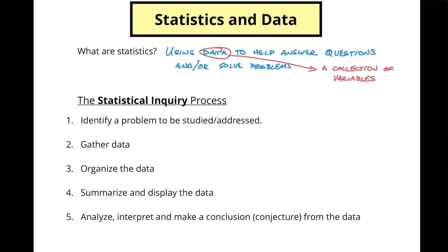When we use statistics, we kind of go through a general process, and that process we call the statistical inquiry process. Here are the five steps that we generally follow. The first thing is to identify a problem that is to be studied or addressed, which is basically what we're talking about when we define what statistics are in a broad sense. Then we gather data. The data that we gather could be measurements, observations, or sampling. Sampling is when you go out and get information from other people, and we'll talk about that in another video.